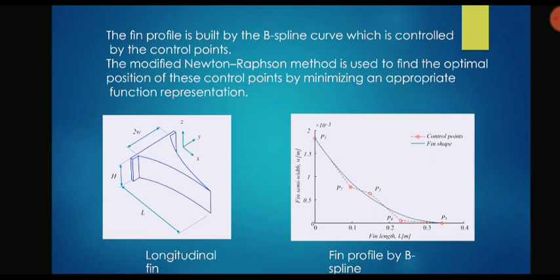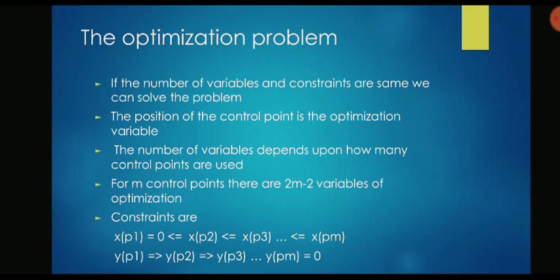If we have suppose five points like in this diagram, five control points, then I am going to have twice of five that is 10 minus 2, so I will be having eight degrees of freedom. If I can come up with the same number of constraints then I will get a solution. The paper comes up with a method to account for all these constraints for a general number of control points say m.